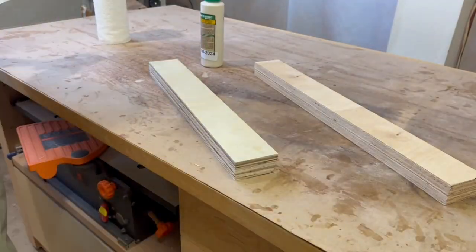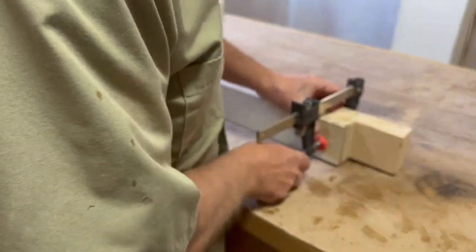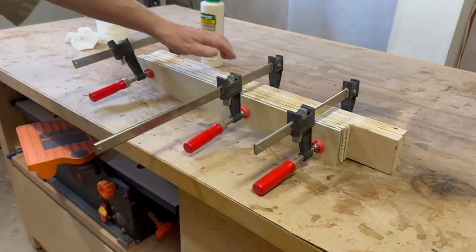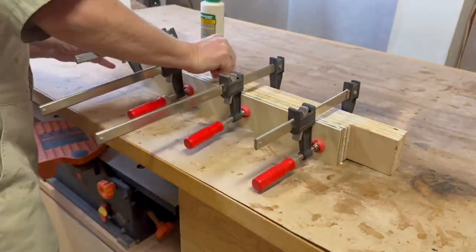To get the one and a half inch thick fences that I want, I glue up the two pieces of three quarter inch plywood for each the front fence and the back fence, and then just clamp both fences at the same time, just because it's easier than doing them separately.